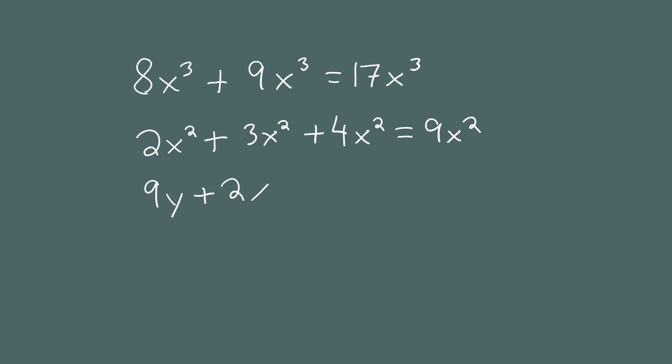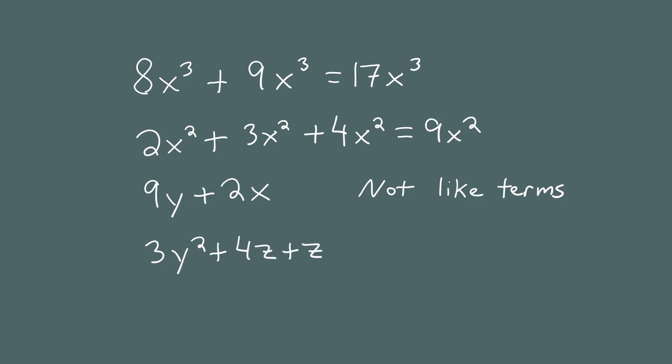9y plus 2x squared plus 9y plus 2x — this expression cannot be simplified, because 9y and 2x are not like terms. 3y squared plus 4z plus z — in this expression, 4z and z are like terms. If you combine them you get 3y squared plus 5z. We cannot combine these last two terms because they're not like terms.